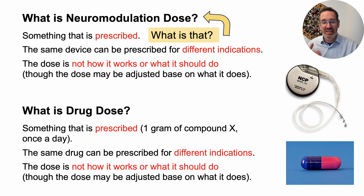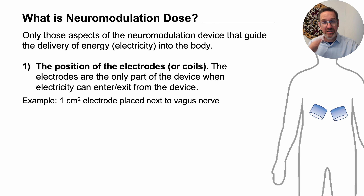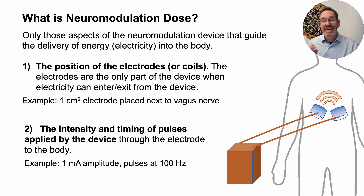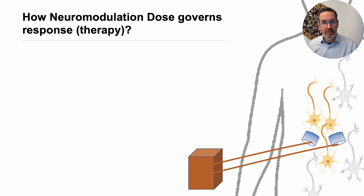So what exactly is neuromodulation dose? Neuromodulation dose is defined as any aspect of the device that governs how energy — maybe electricity — enters the body. It comes down to just two things. The first is where you put the electrodes, or in the case of magnetic stimulation, the coil on the body. The second is the waveform played by the device into the electrode or coil — for example, a waveform with a 1 milliamp maximum intensity pulsed at 100 Hz. These two things completely define neuromodulation dose.